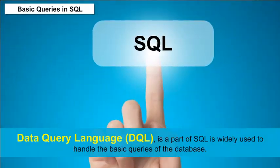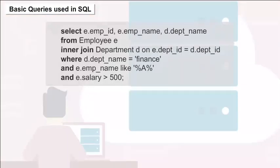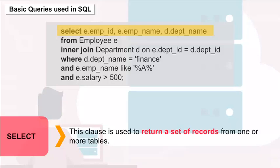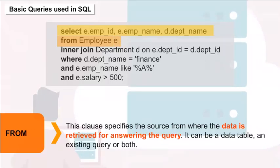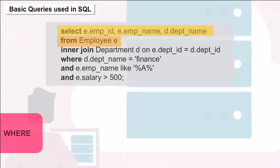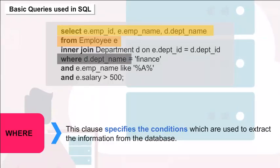SQL is widely used to handle the basic queries of the database. Basic Queries used in SQL: Select — this clause is used to return a set of records from one or more tables. From — this clause specifies the source from where the data is retrieved for answering the query; it can be a data table, an existing query, or both. Where — this clause specifies the conditions used to extract the information from the database.